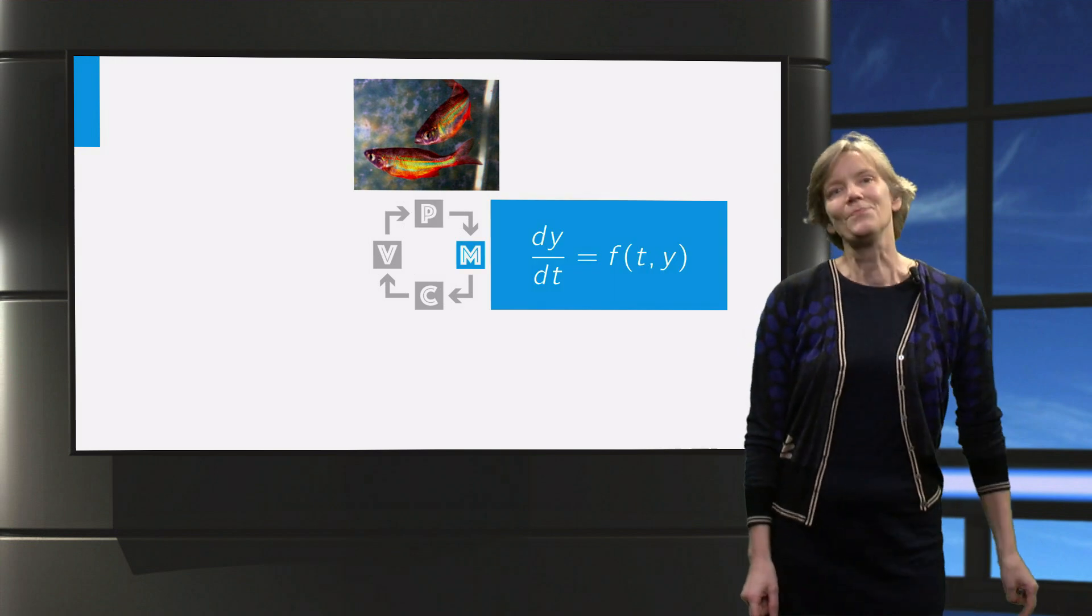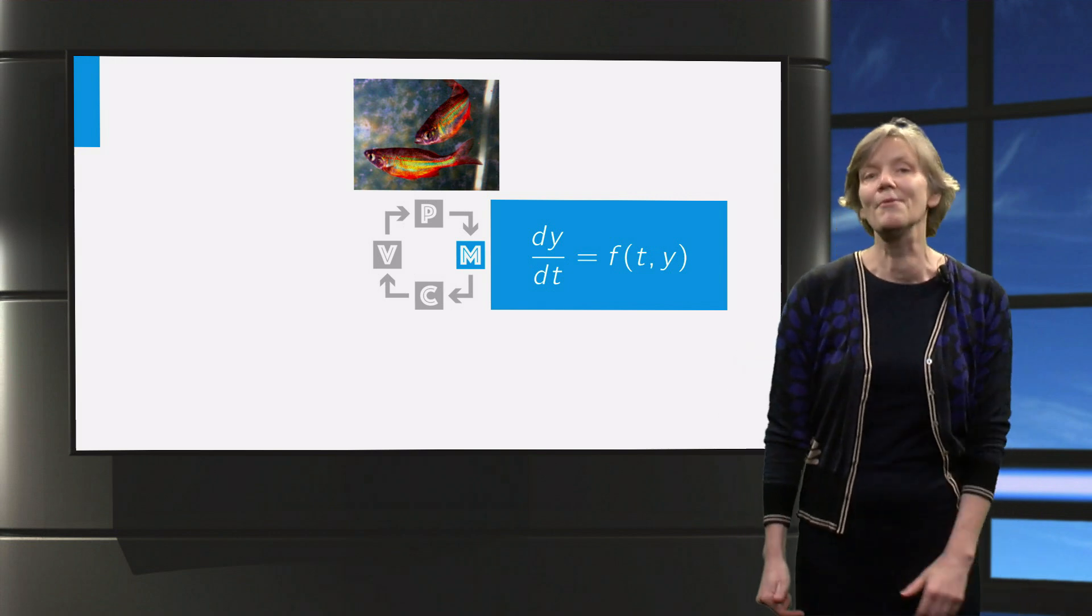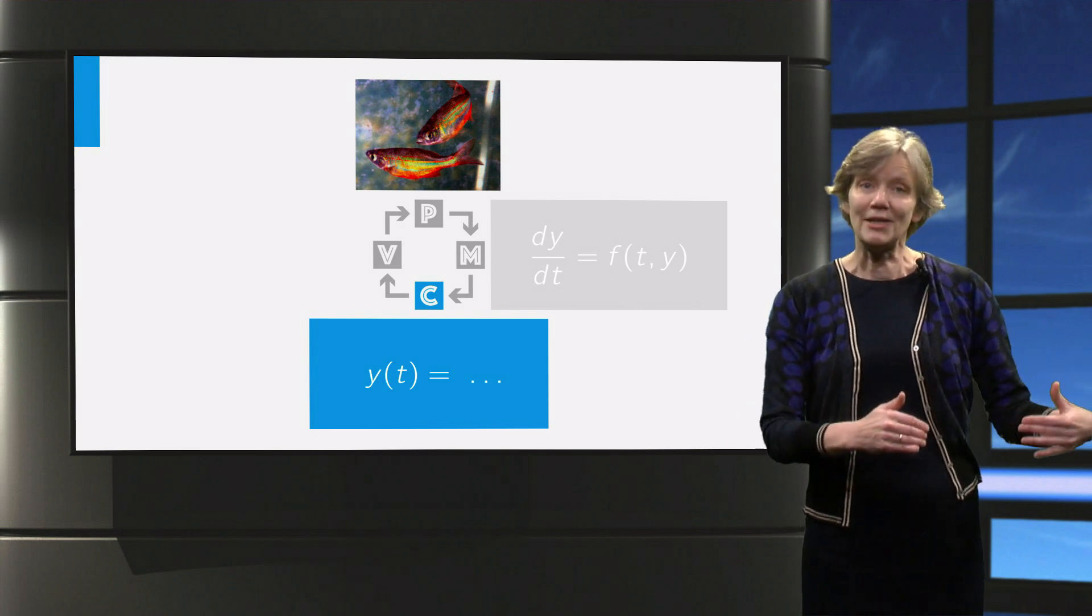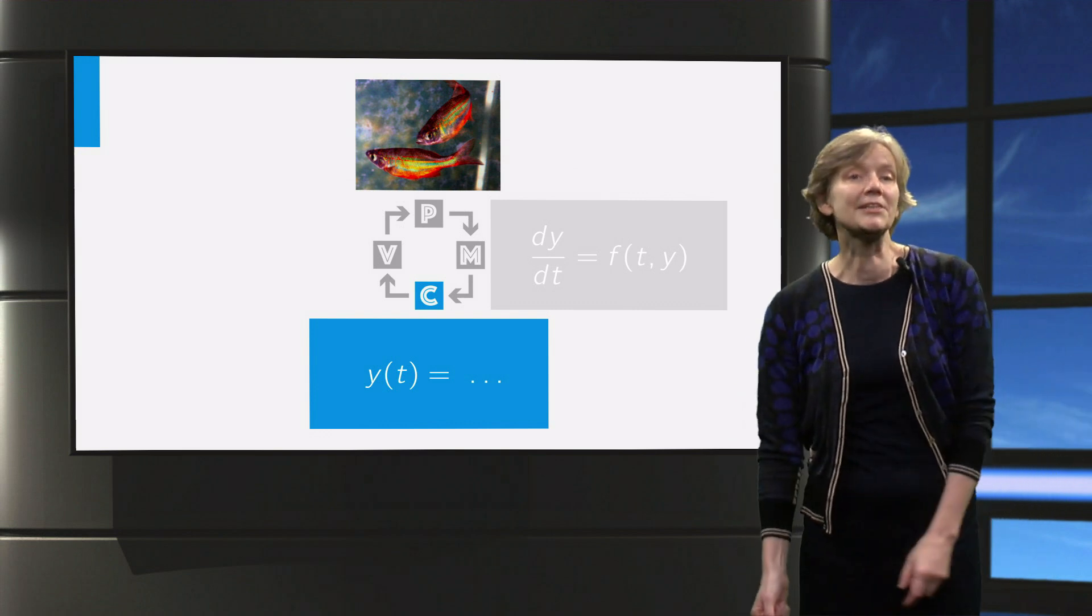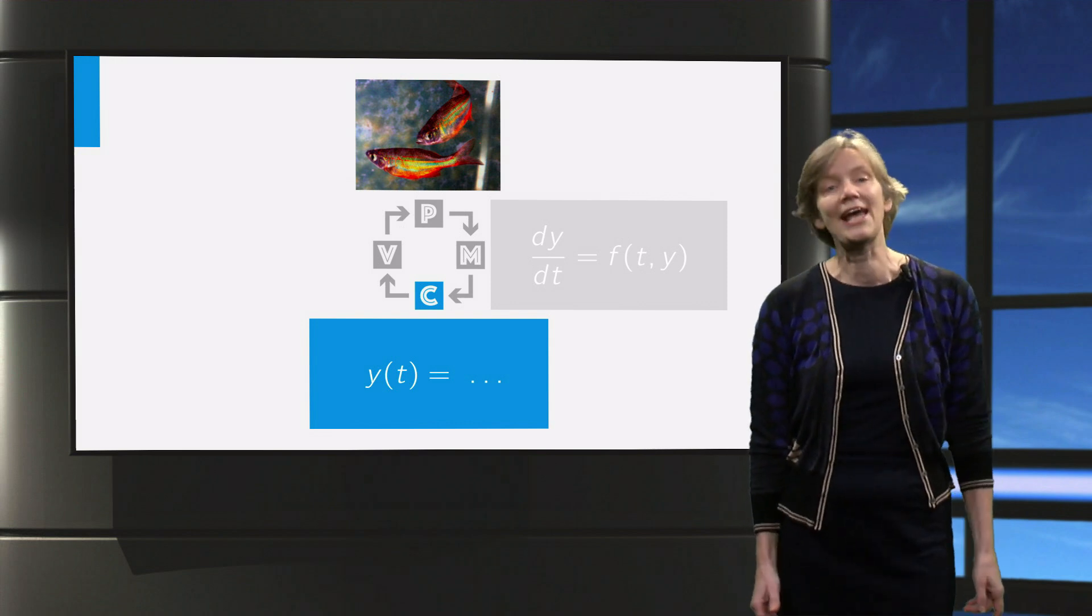At first, as a first mathematical model, we use a differential equation describing the growing population. Then in the first modeling cycle we will calculate the analytical solution of the differential equation with hand calculation.